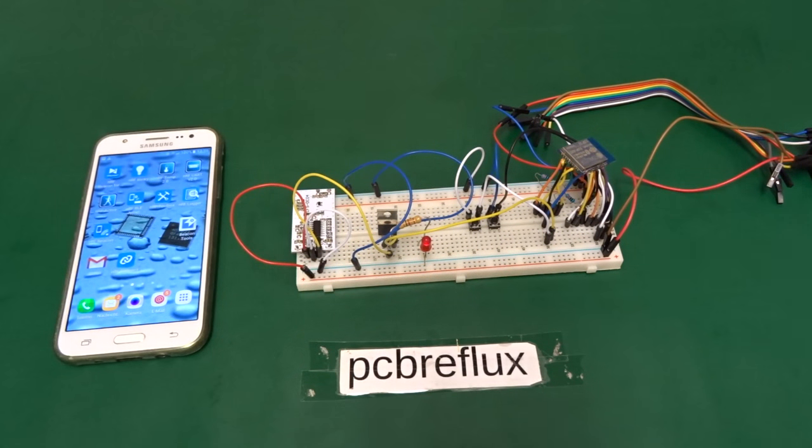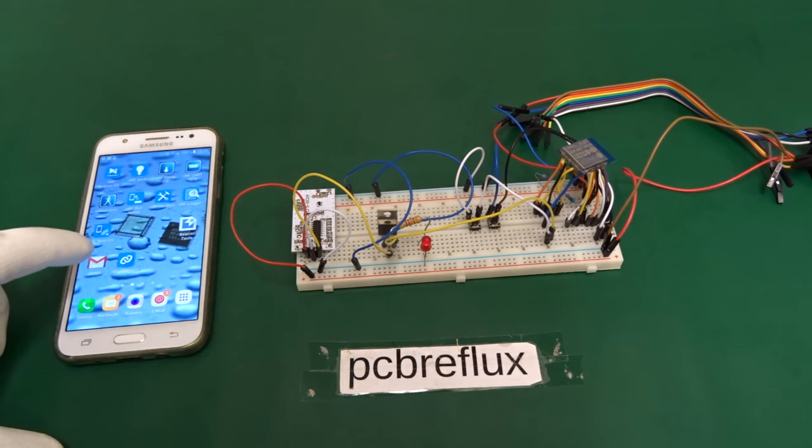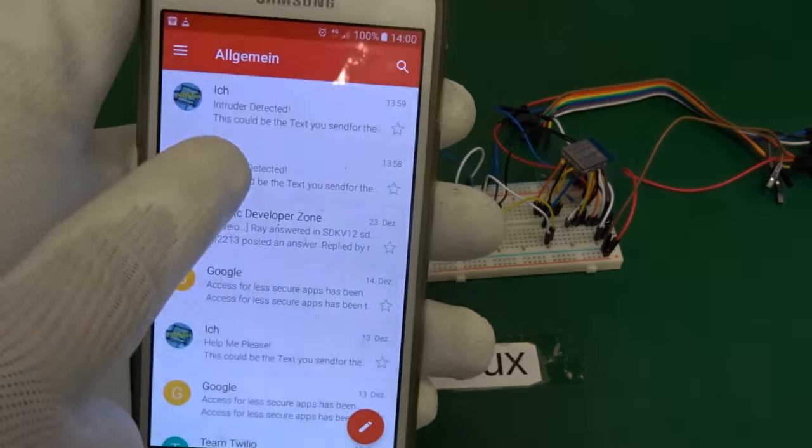So I just test it again. And we start again. And yes, we also have to wait that the Wi-Fi is connected and the email is sent out. And then we receive an email. And it's also the intruder detection email.